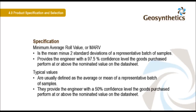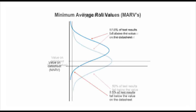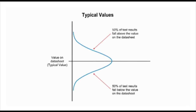The specification will nominate the minimum acceptable strength of the geotextile. MARV results ensure that 97.5 percent of test results will meet or exceed specification. When engineers specify typical values, they need to accept that 50% of test results will not meet specification.